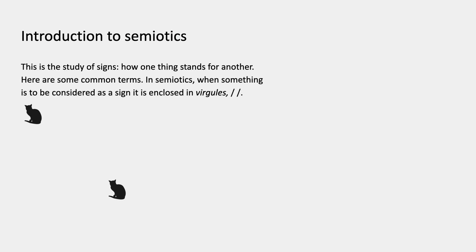I have a couple of screens here to introduce semiotics in a more formal way. Semiotics is the study of signs — how one thing stands for another. In semiotics, it's useful to know that when something is to be considered as a sign, it's enclosed in these double slashes called virgules. So if I enclose a cat in virgules, it means I'm not talking about an actual cat; I'm trying to consider its function as a sign. The basic unit of meaning in semiotics — the basic subject — is the sign, and that's a perfectly good way of referring to it.